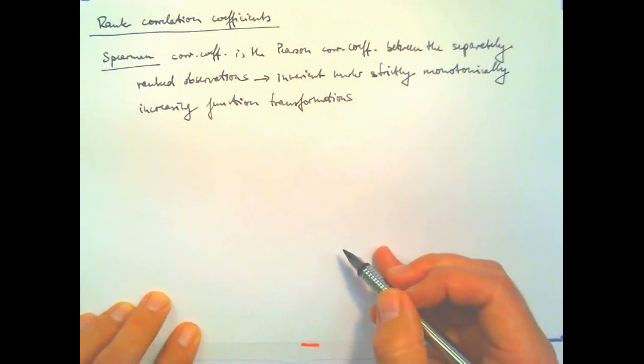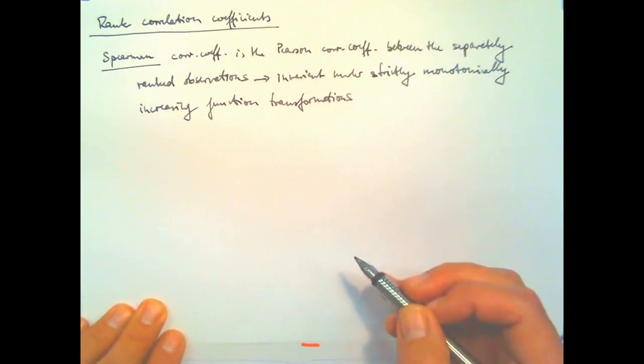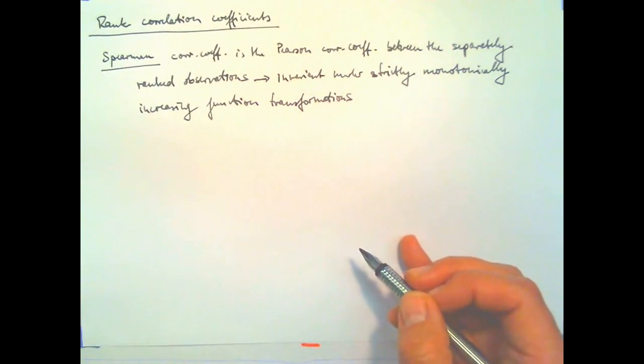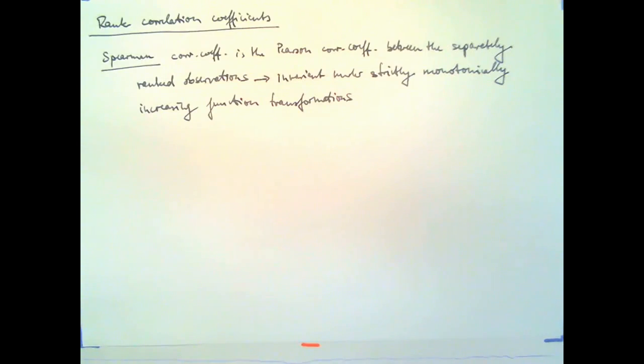For example, you can take the log or the square root or the exponential of one of the random variables and this will not change the order of the random variables and will hence not change the Spearman correlation coefficient.